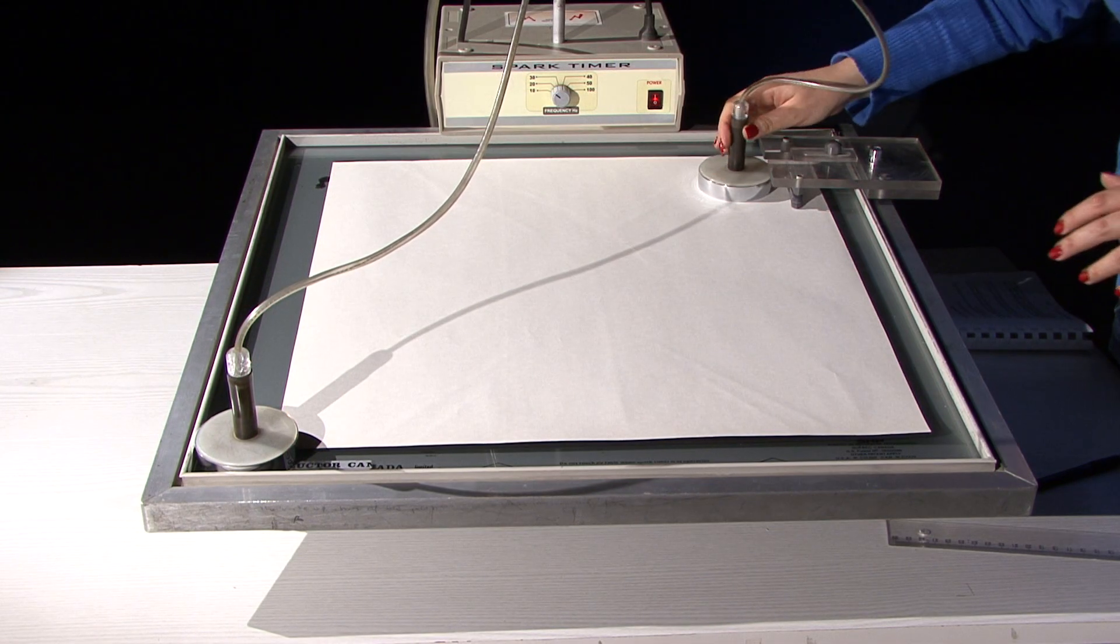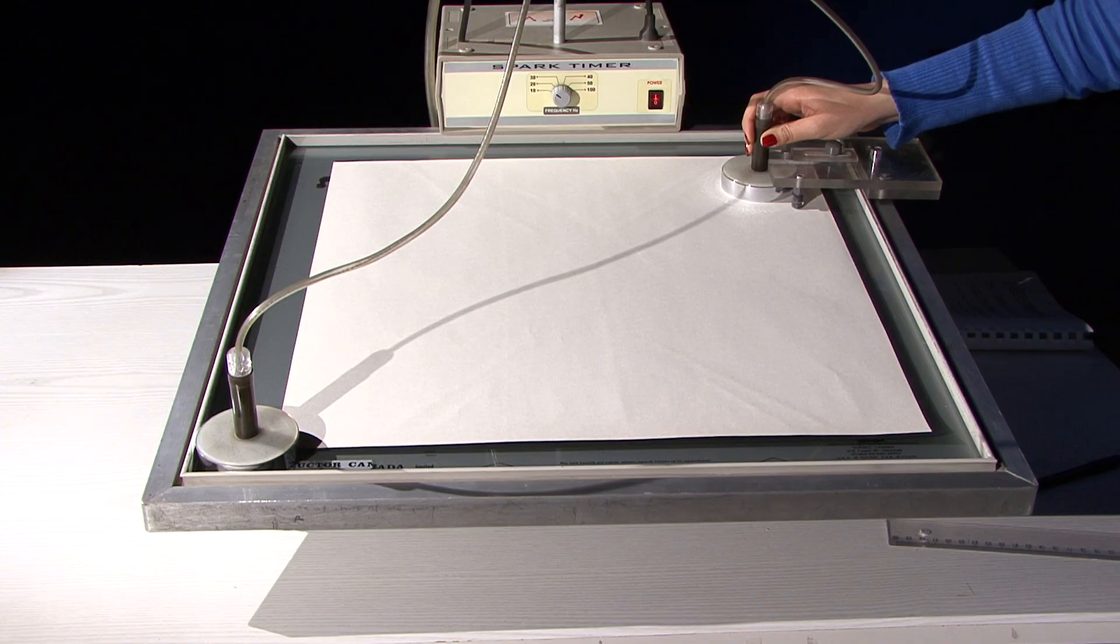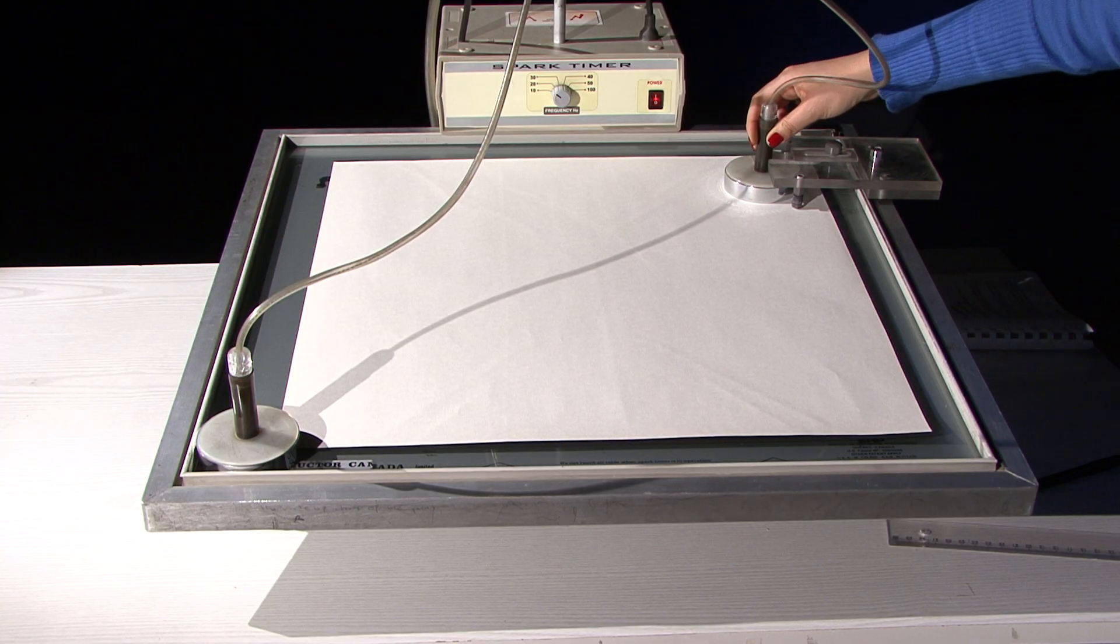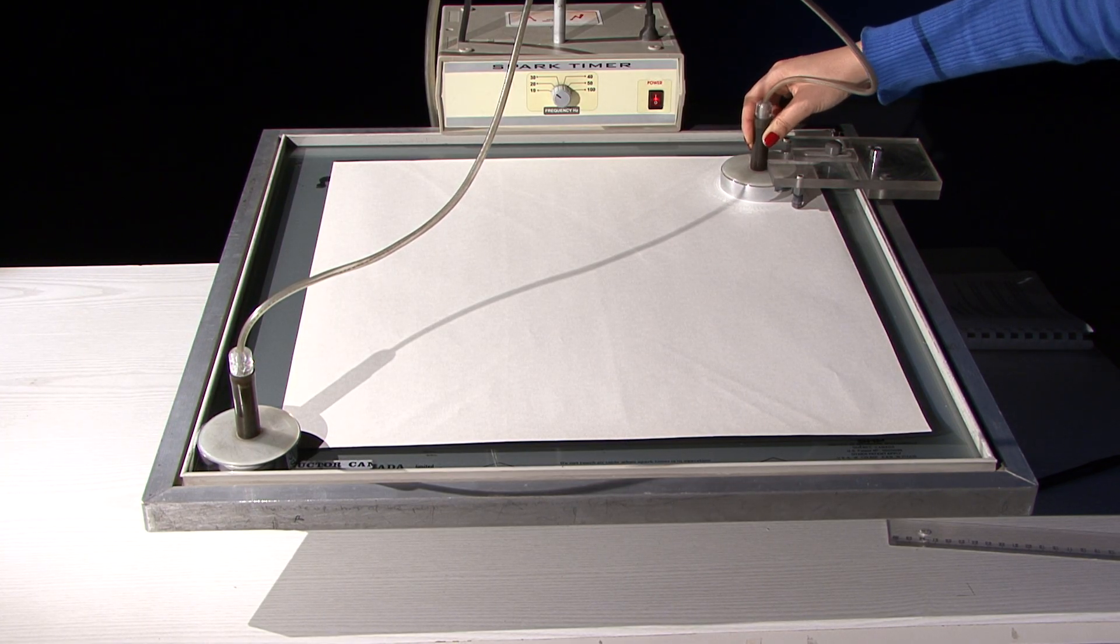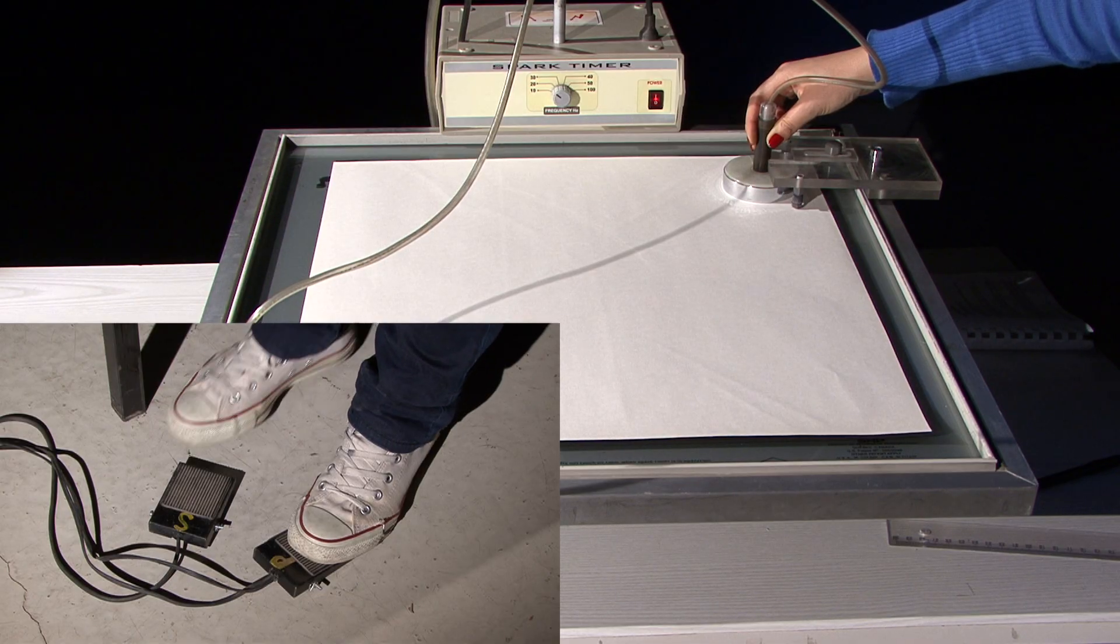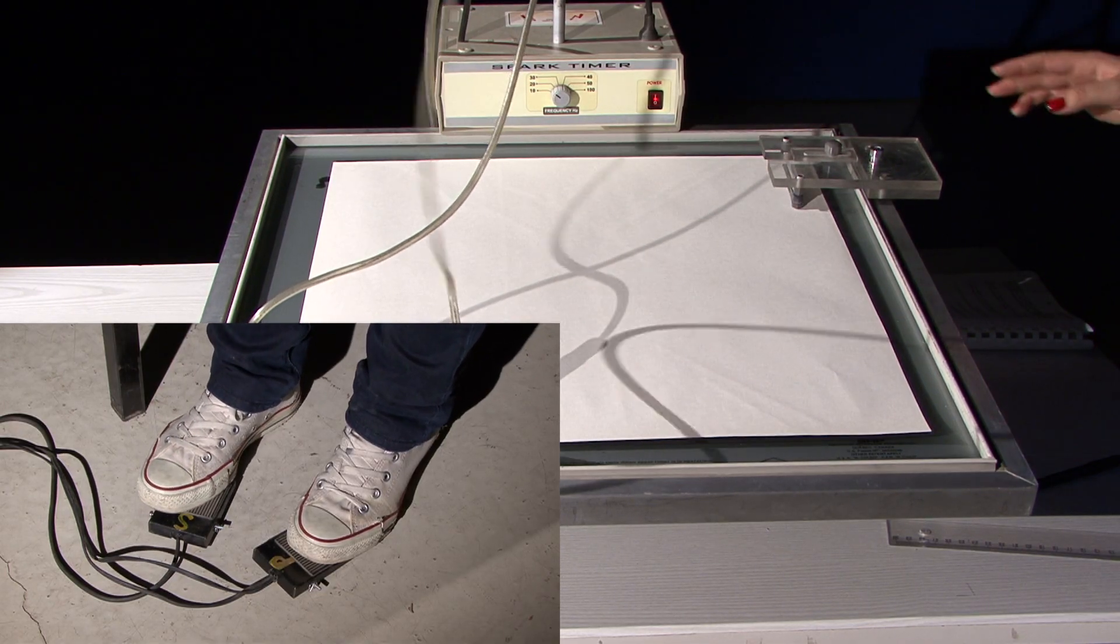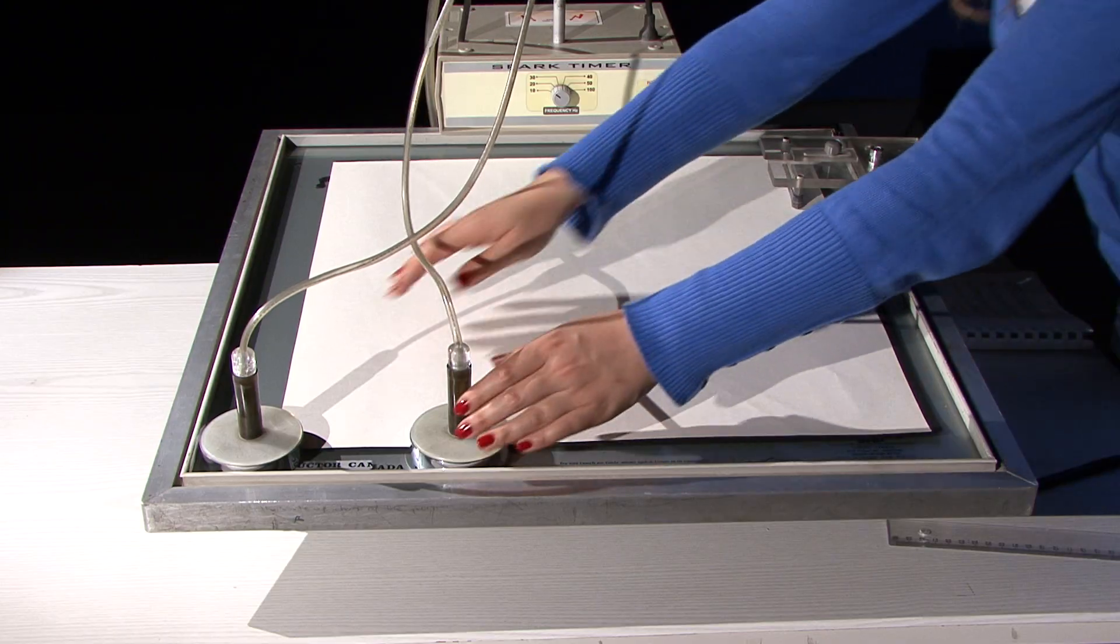This time place the puck in the launcher. Press on the P switch and extend the cord with the puck while keeping it fixed. Press on the S pedal at the instant of releasing the puck. Now you can analyze the data.